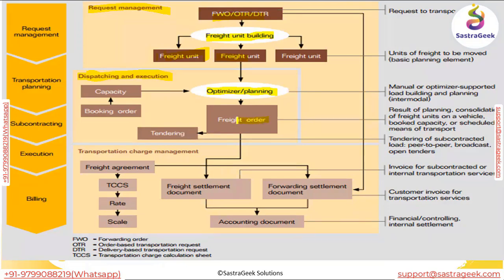We can then send the freight order for freight tendering. Freight tendering is basically about which carriers are available for servicing on that transportation lane. There are two types of tendering: first is peer-to-peer tendering, and second is broadcast tendering. We will see the entire tendering process in much more detail as we go along.